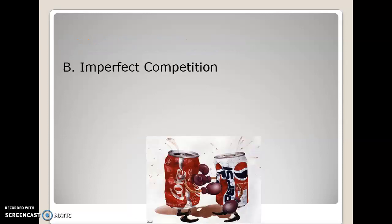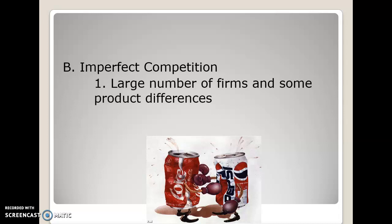Letter B: Imperfect competition. Imperfect competition is the most prevalent — or most common — form of competition in the U.S. today. There are many producers of slightly differentiated goods, each firm has some control over prices, and they can enter or exit the market with relative ease. Number one: there are a large number of firms and some product differences.